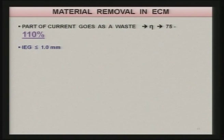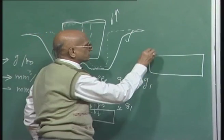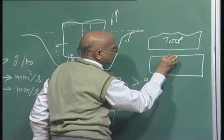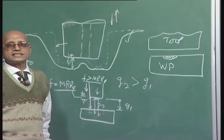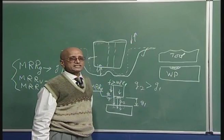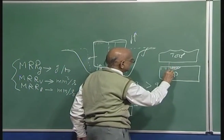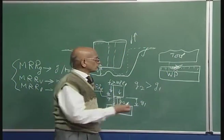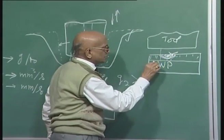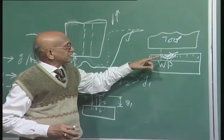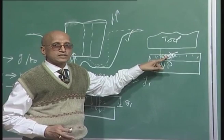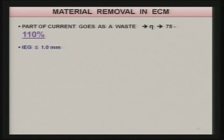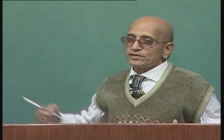How does efficiency exceed 100%? Suppose you are machining a casting that contains electrically non-conducting sand particles or inclusions. Material dissolves from around the non-conducting particle; the particle comes out without being dissolved. When the mass of the machined component is measured, the current was not utilized for dissolving that non-conducting particle, so the efficiency appears to be greater than 100%, which is fictitious and due to such inclusions.